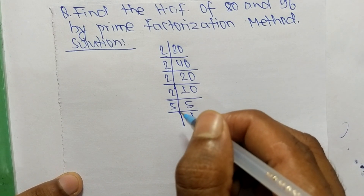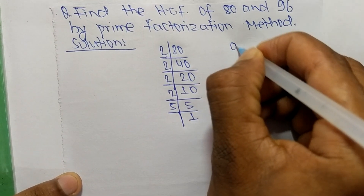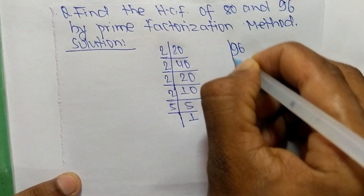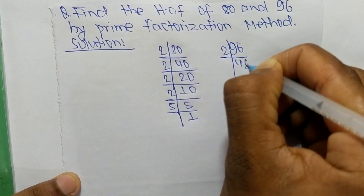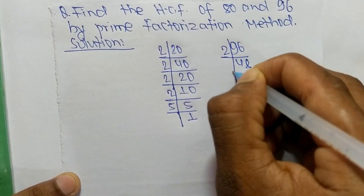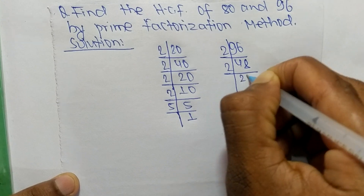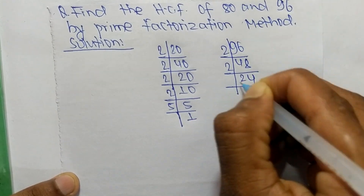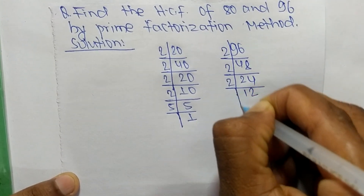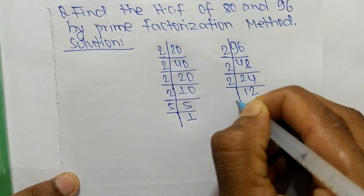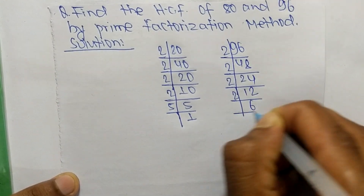Likewise, the prime factors of 96 are: 2 times 48 equals 96, 2 times 24 equals 48, 2 times 12 equals 24, and 2 times 6 equals 12.